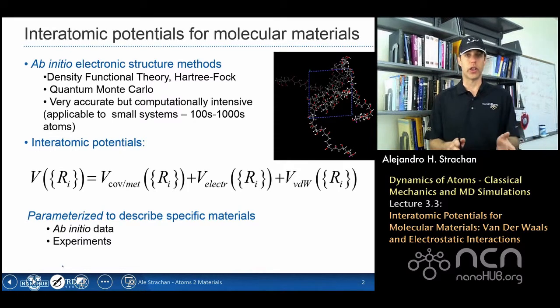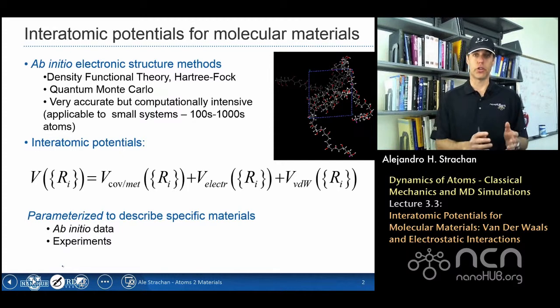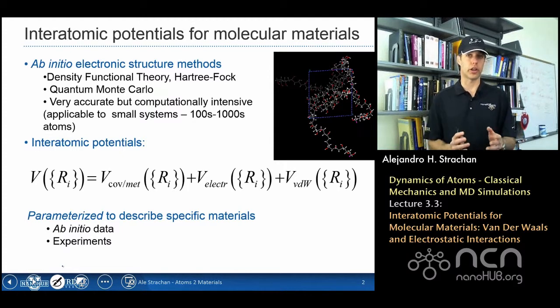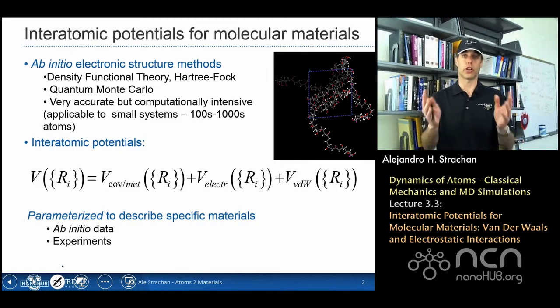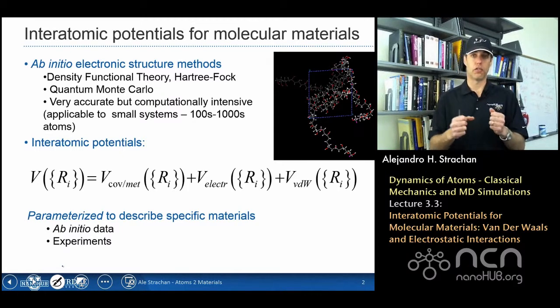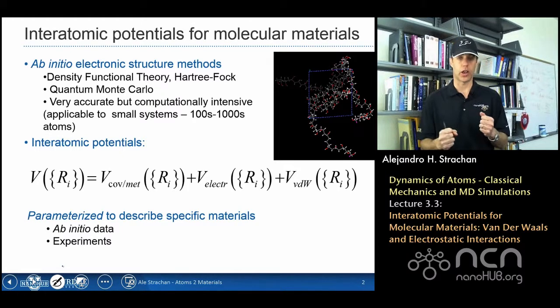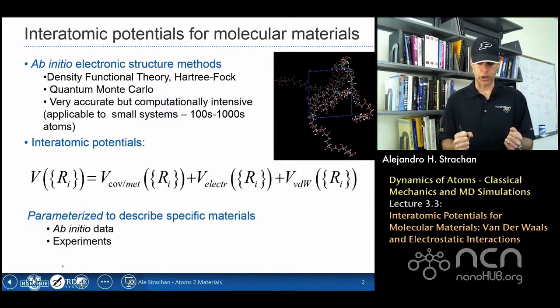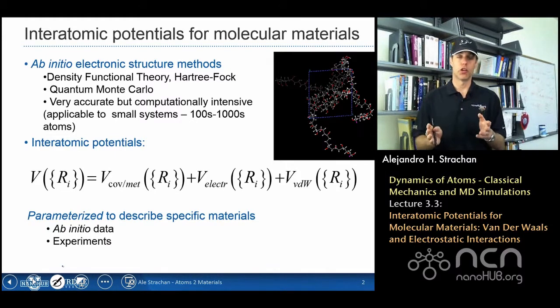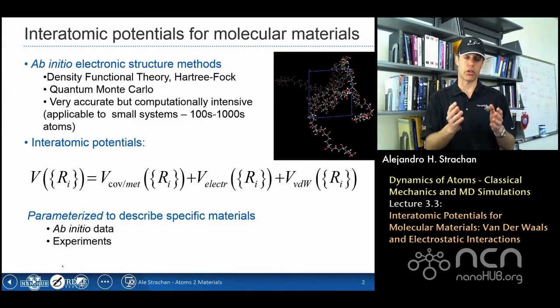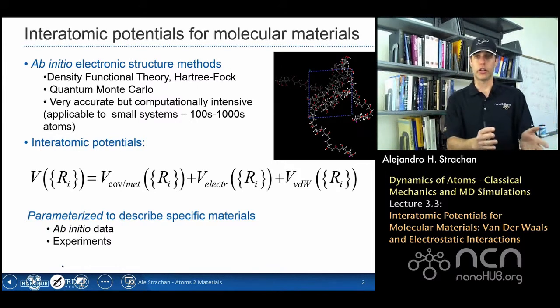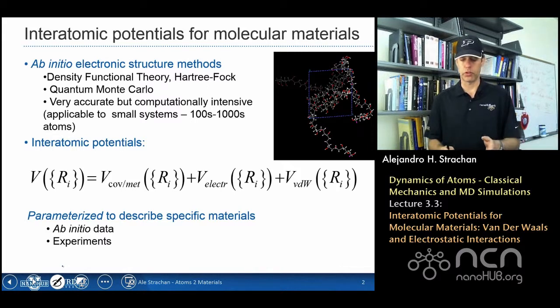So as we said during last lecture, the total energy of the system, if we use an interatomic potential, the total potential energy is an expression that's a function of the atomic positions, r sub i. And for molecular materials we broke this total energy, total potential energy, into covalent interactions that we discussed in the previous lecture.